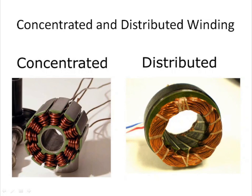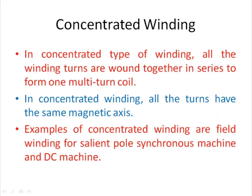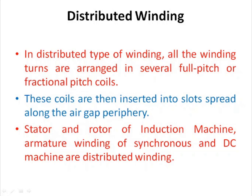Concentrated and distributed winding. This is the diagram of concentrated winding and this is distributed winding. In concentrated type of winding, all the winding turns are wound together in series to form one multi-turn coil, and all the turns have the same magnetic axis. In distributed winding, all the winding turns are arranged in several full pitch or fractional pitch coils along the air gap periphery.